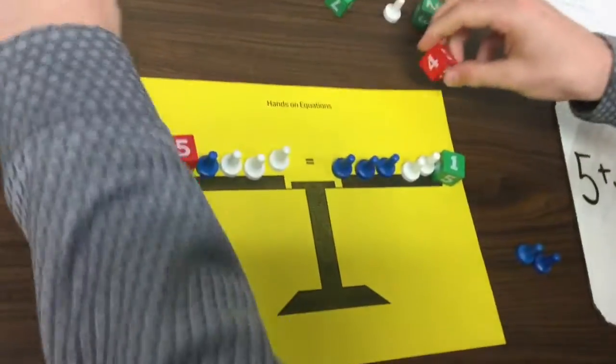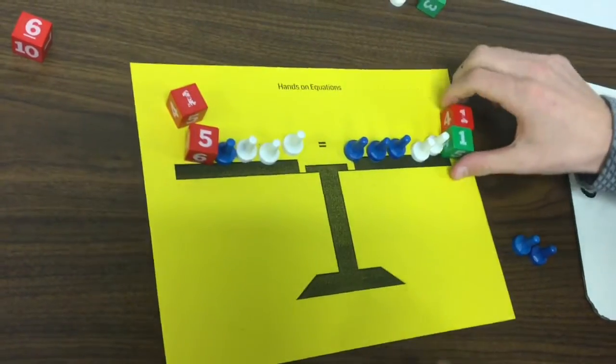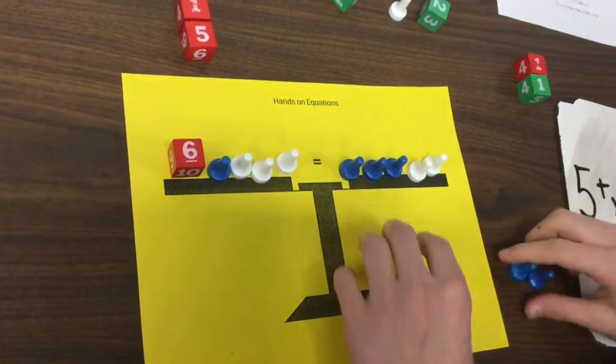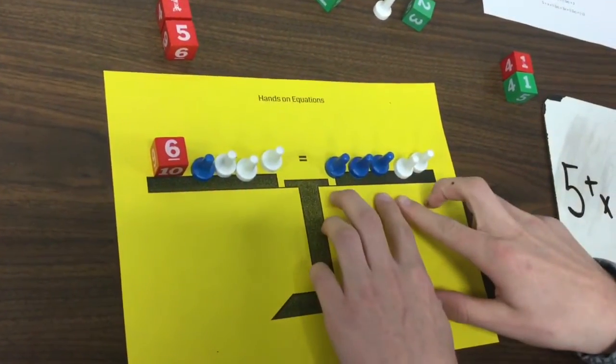Now what I'm going to do is I'm going to add 1 to each side. So this is a pair of 0, and 5 plus 1 is 6, so out of nowhere comes a 6. And so now what we have here is this.